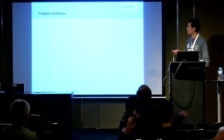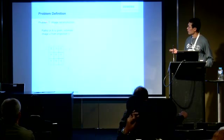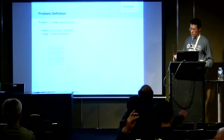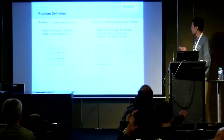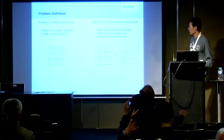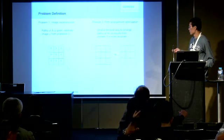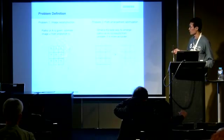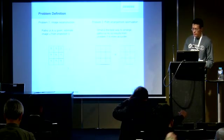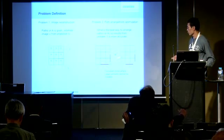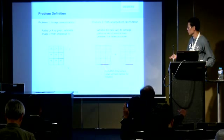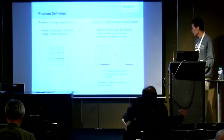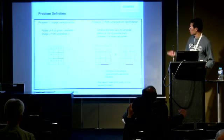Now we formally formulate our problem. First, we want to solve the image reconstruction problem: we know the projection matrix A, we know the path average b, and we want to reconstruct the image. The second problem we call the path arrangement optimization problem. In this case, we do not know A — you can arbitrarily arrange your paths, but which arrangement will be better? A better path arrangement should help produce better image reconstruction results. In practice, with a realistic boiler, there are restrictions: some forbidden zones on the wall where you cannot install laser sensors. To our knowledge, there is no prior work on this second problem, and we are going to tackle both problems in this paper.